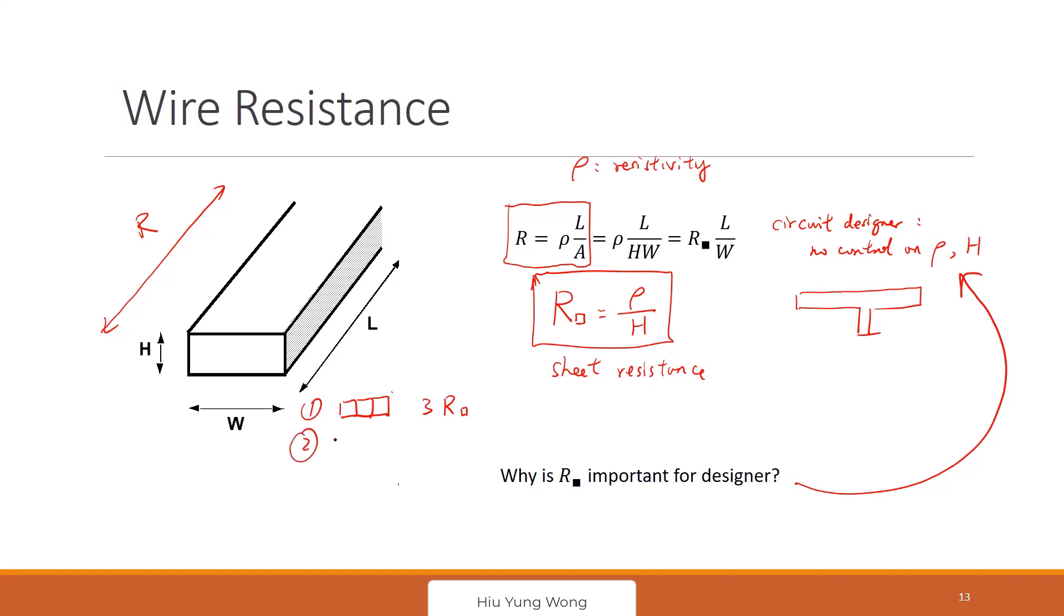How about this one? How many sheet resistance do I have? Anyone? If I draw a six R squared. So you know that this one is six, three, two times more resistive than the other.